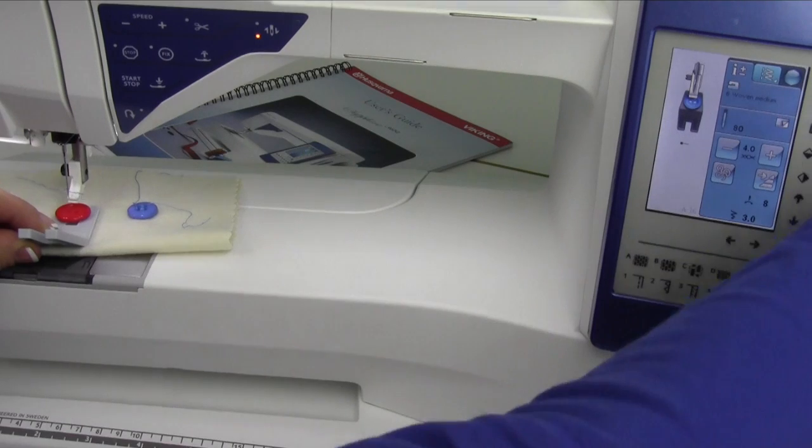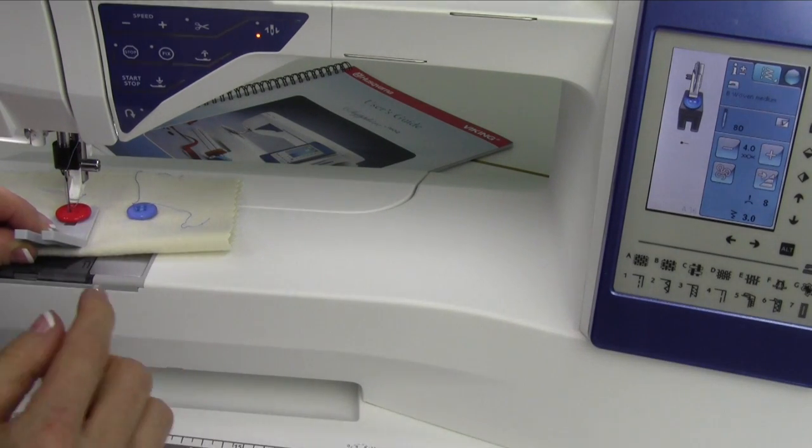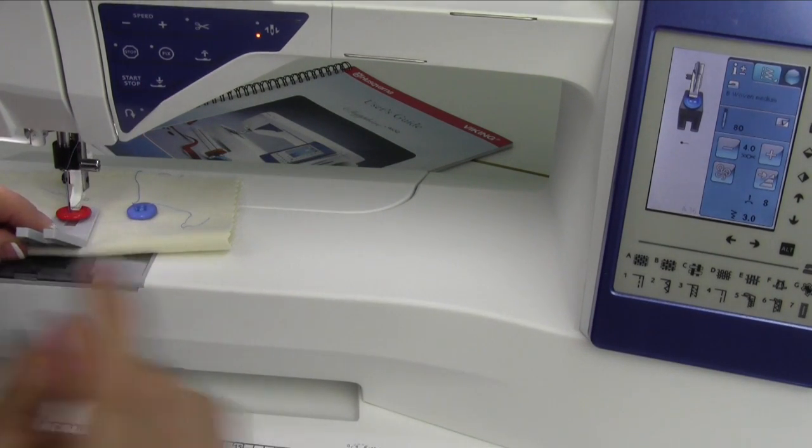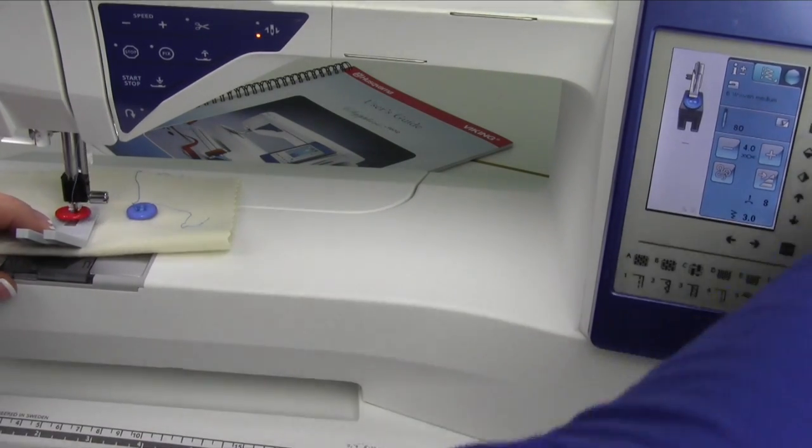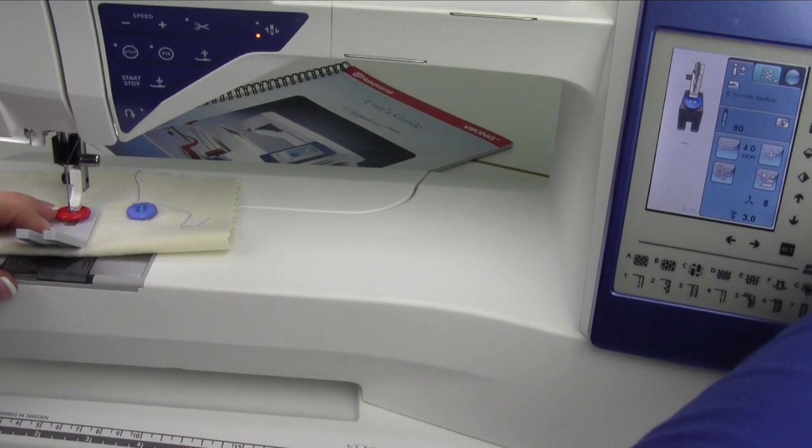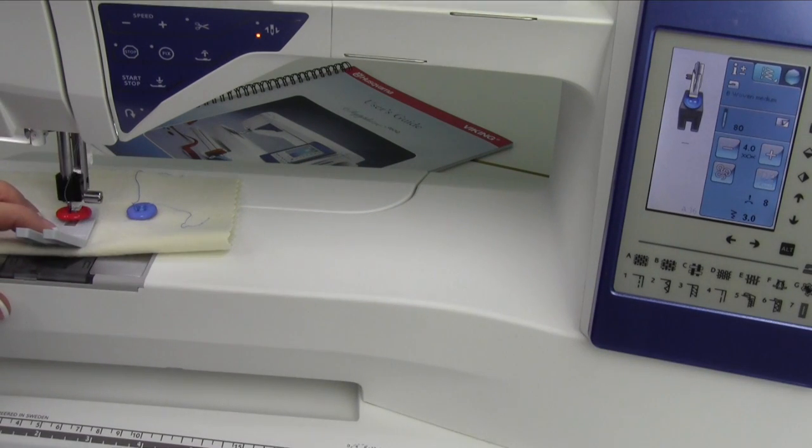You're going to go ahead and set your button on top of the tool. Once again, sink your needle manually down into the left hole of the button and then lower the presser foot down. Check the swing. There it goes. It's set. I'm going to just maybe check it just because it moved just a little bit. There we go. Then just go ahead and stitch.